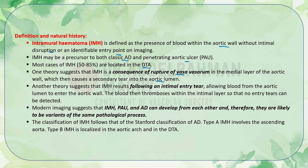Another theory suggests that IMH results following an intimal entry tear allowing blood from the aortic lumen to enter the aortic wall, but this blood thromboses within the intimal layer so that no entry tear can be detected on imaging. Modern imaging suggests that the three concepts of IMH, penetrating aortic ulcer, and aortic dissection can develop from each other and are likely variants of the same pathological process affecting the medial layer of the aortic wall.